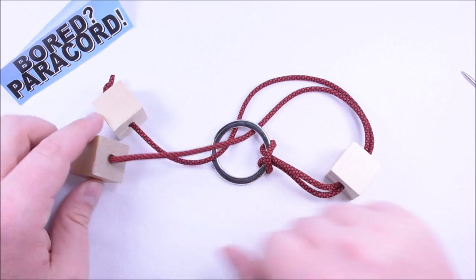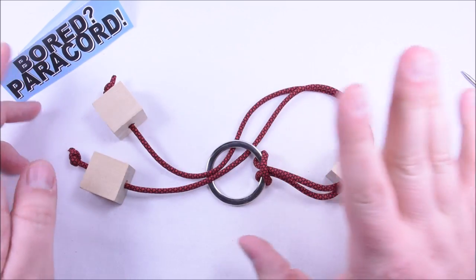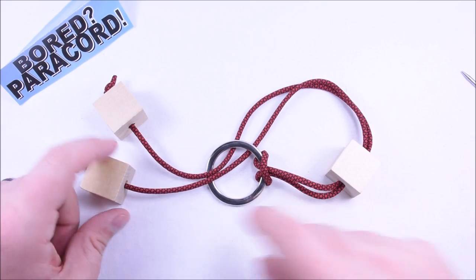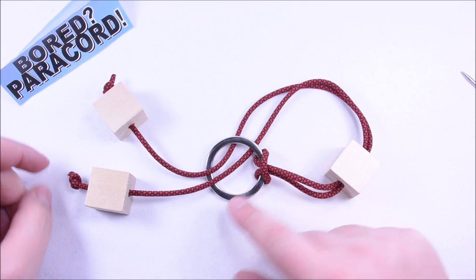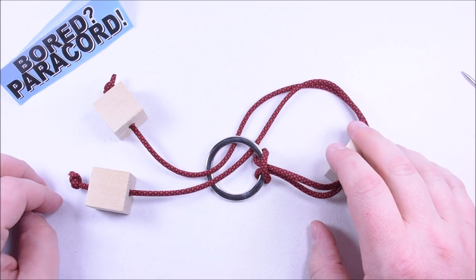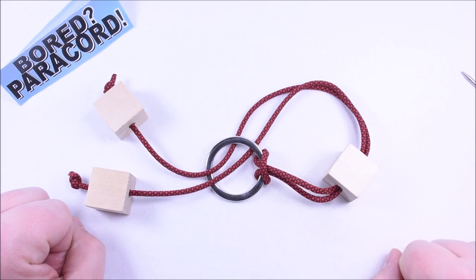We also sell the rings on our website, but what I've done is put together a kit on our website that comes with these three blocks that are drilled out, three feet of paracord, and a ring. You can find a link for that down in the description so that if you want to make this, you can purchase the whole kit and then put it all together like how we do in the next step.